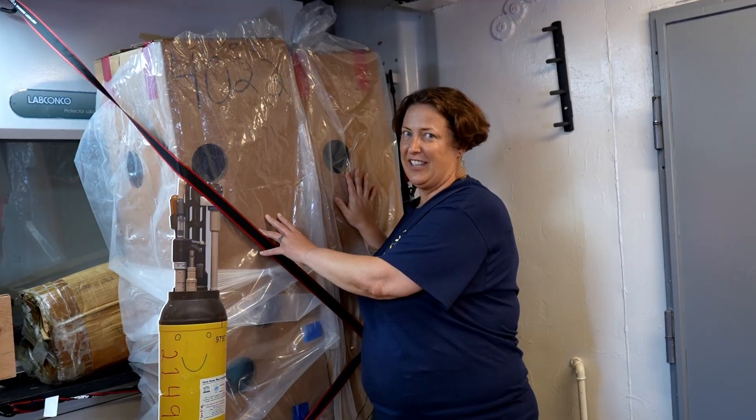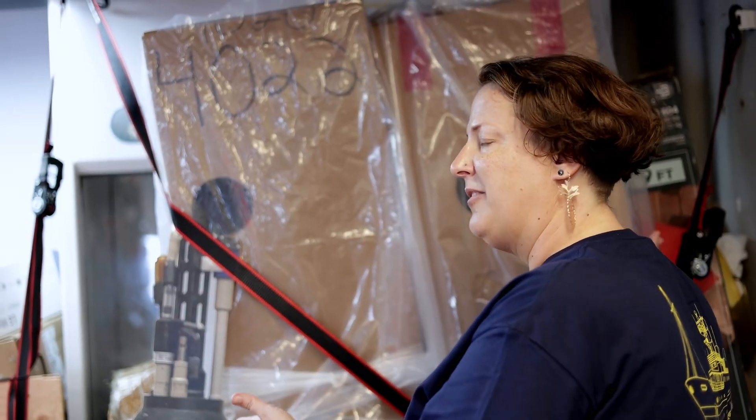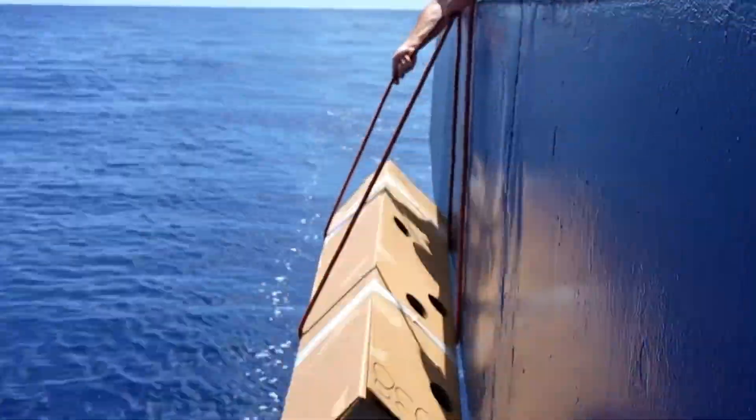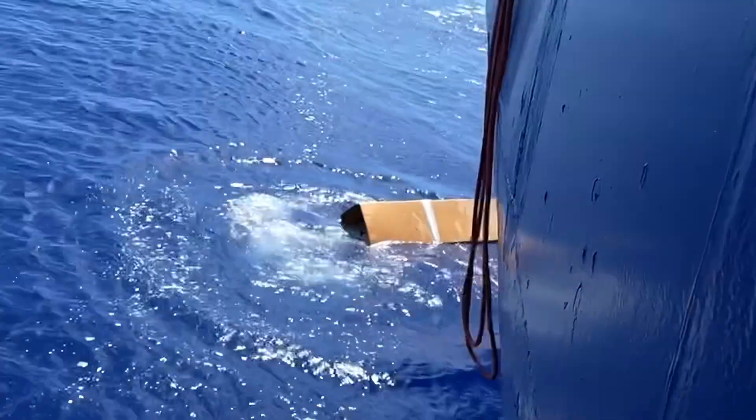The floats that we're deploying are inside of these cardboard boxes. As you can see, we've got two left. We've already deployed four from EV Nautilus this week. We deploy them inside their cardboard boxes that keeps all the sensors and everything safe while we're lowering it over the side of the ship.